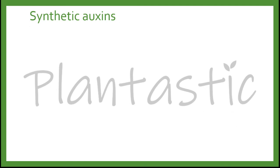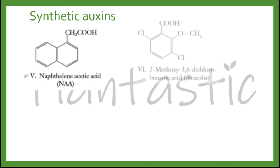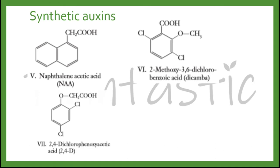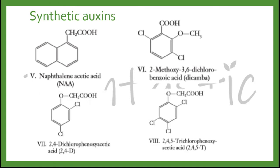Here are the synthetic osins: NAA, Dicamba, 2,4-D, and 2,4,5-T. Most papers use NAA and 2,4-D. However, Dicamba can also be found, and it was mentioned in a book that Dicamba is very effective in stimulating callus formation in monocots.